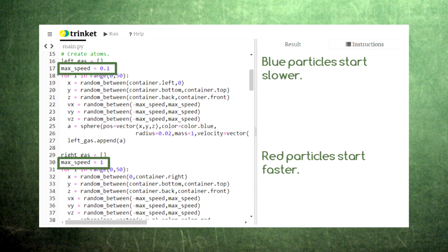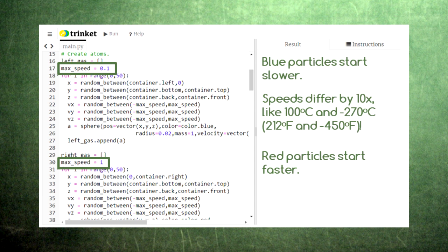The particles in the blue gas will start out with a maximum speed of 0.1, while the particles in the red gas will start out with a maximum speed of 1. That means that the temperature in the red gas is 100 times higher than the temperature in the blue gas, since temperature depends on the square of the speed. That's like the difference between the boiling point of water and just a few degrees above absolute zero.